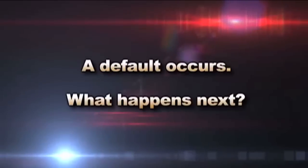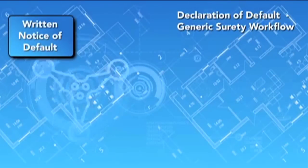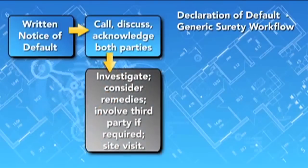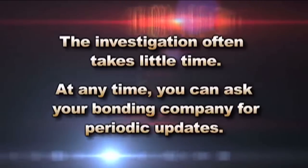When a contractor actually defaults, the first step in the default resolution process is investigation. When the surety receives notice that the contractor is in default, the first thing they'll do is write back immediately to acknowledge that notice, then begin gathering information and investigating the circumstances of that call of default. In many cases the investigation will take very little time, particularly when the contractor isn't solvent or can't continue. In other cases — where the contractor is still solvent and disputing the call of default — it takes longer. If you request it, the surety will provide periodic updates on the investigation's status.